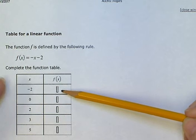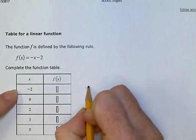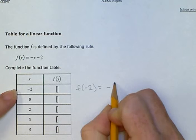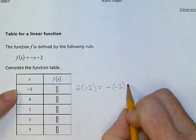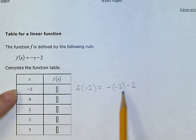So let's start with this row, negative 2. So when we put negative 2 into the function x, that means we're going to put a negative 2 where x was. So I'm rewriting this as minus, use the parentheses, minus 2, minus 2.